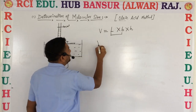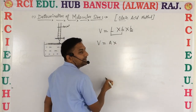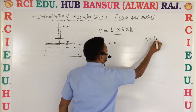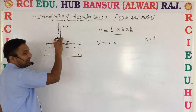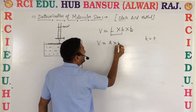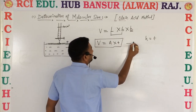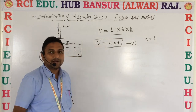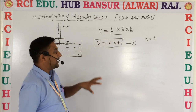So volume is equal to area multiplied by height, and height is equal to the thickness of the molecule. So height equals small 't' (thickness). This is equation number one. Now we have a mathematical calculation to do.